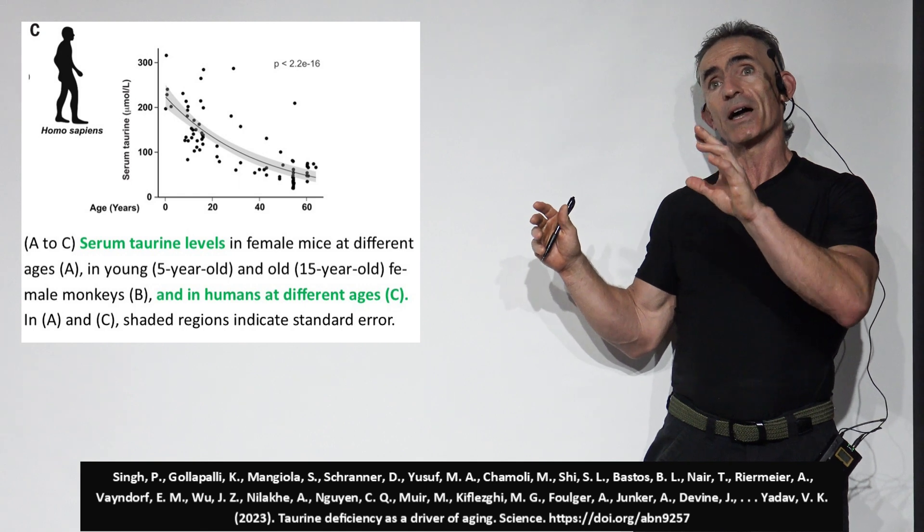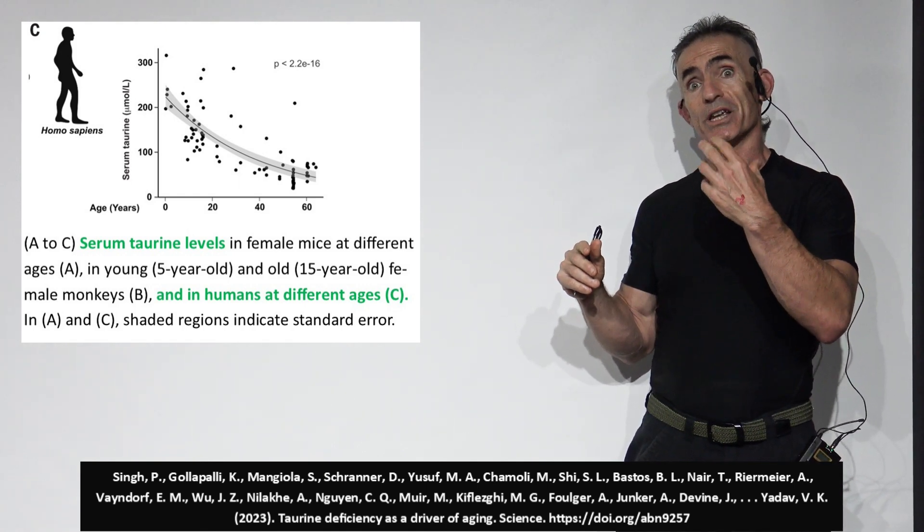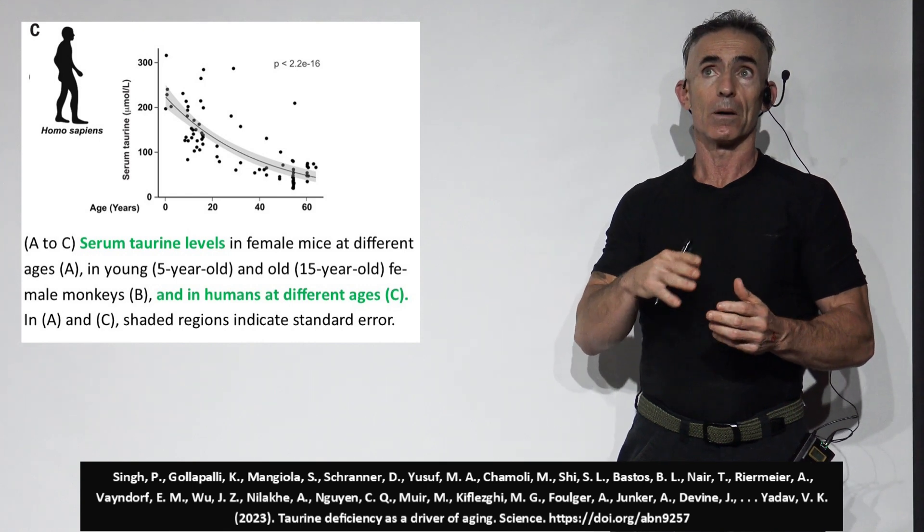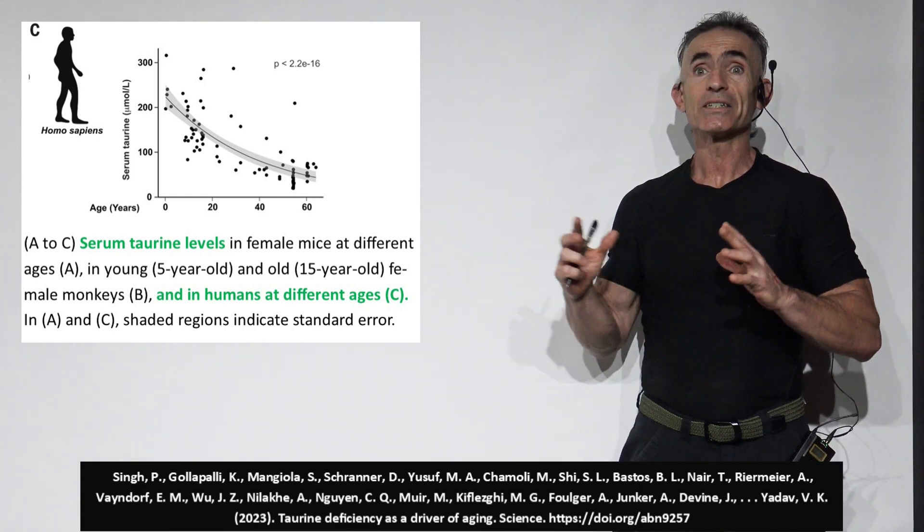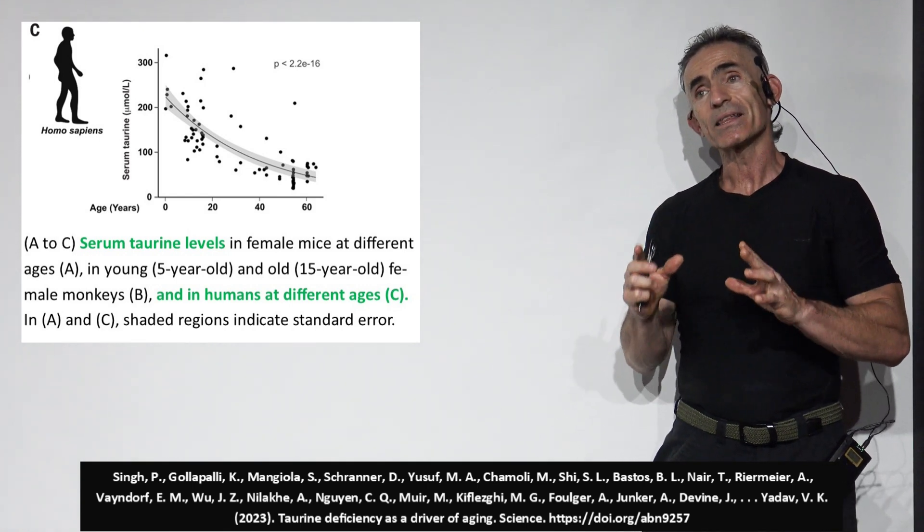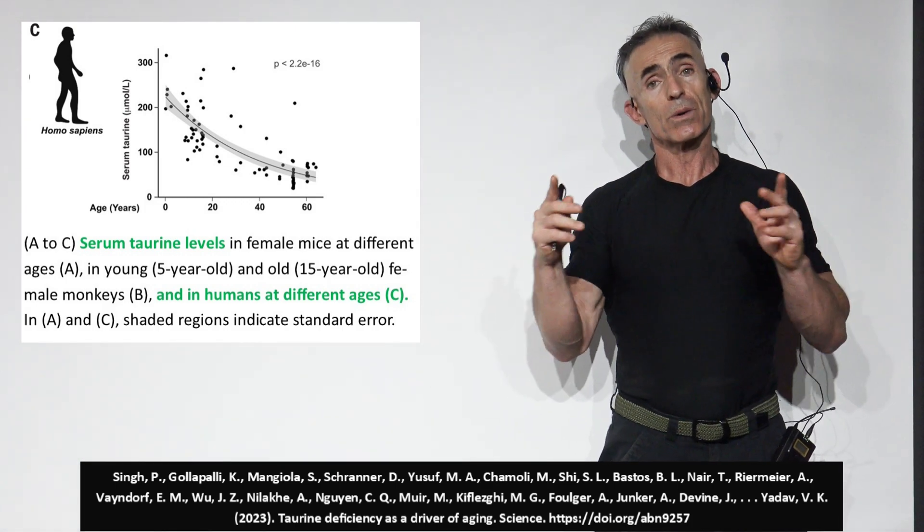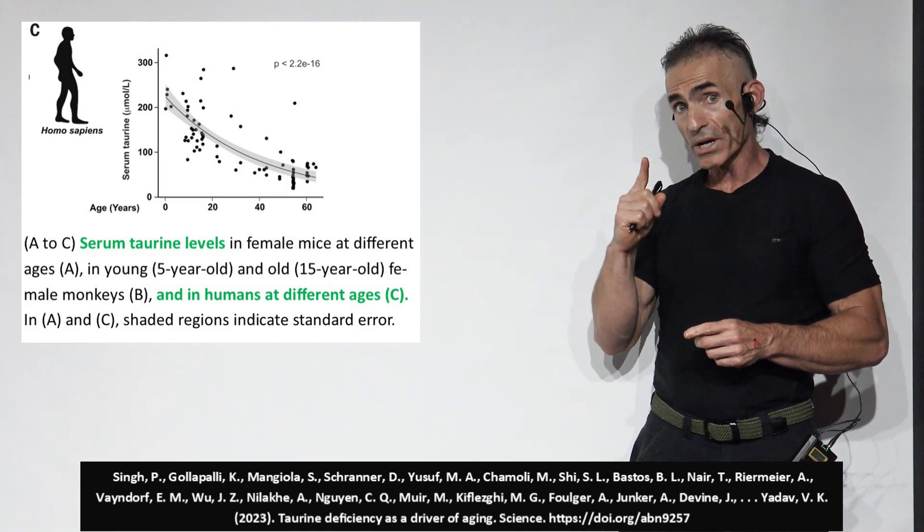What was noticed by the researchers, in particular there was an interview with the lead researcher, is they did a metabolomic assay, and the most dramatically down-regulated nutrient out of all the nutrients in regard to aging was taurine.